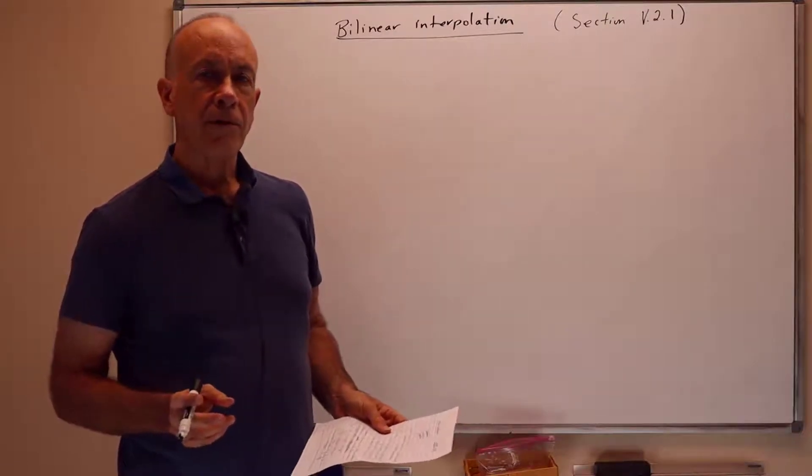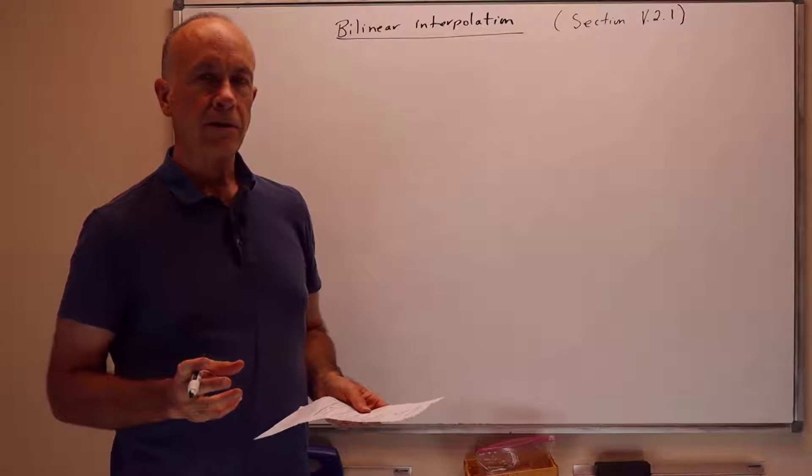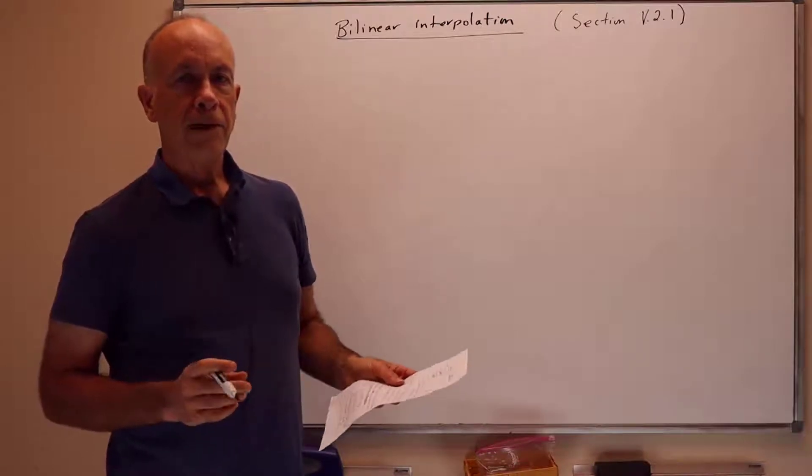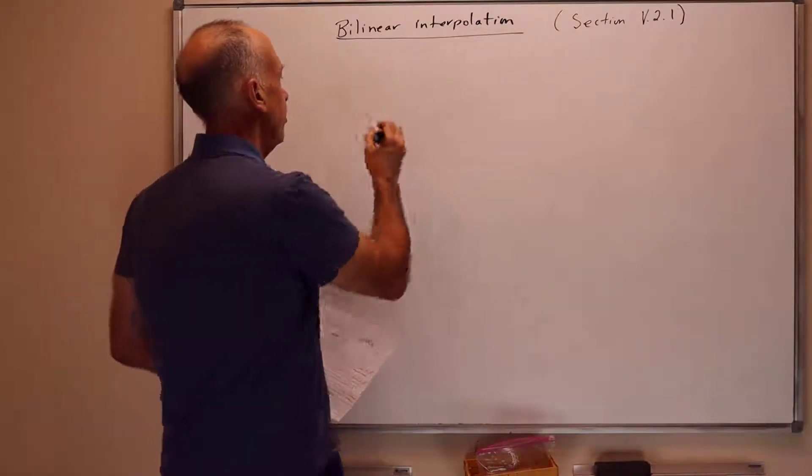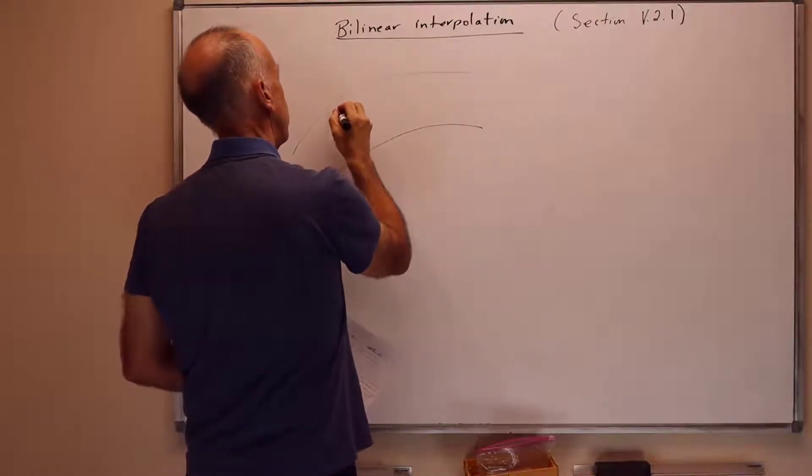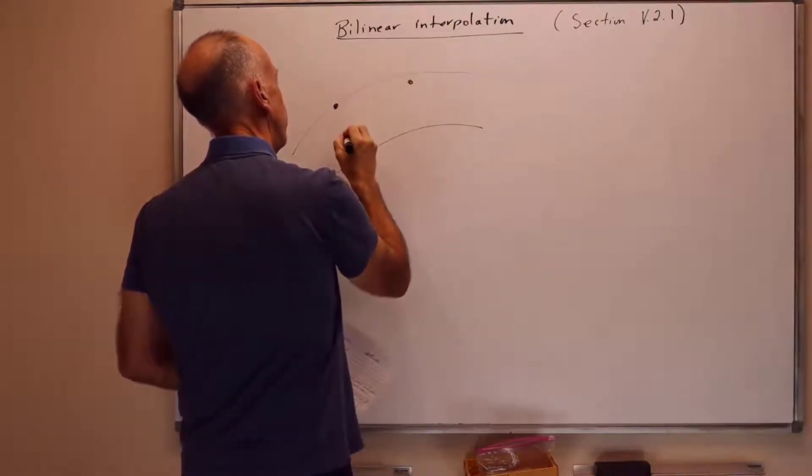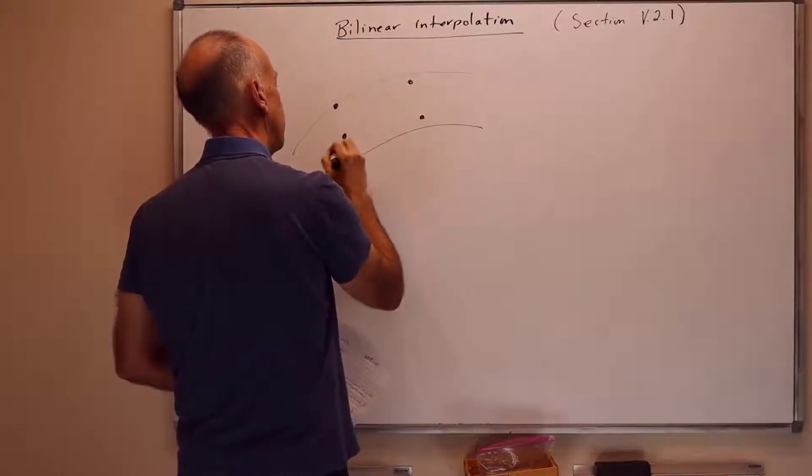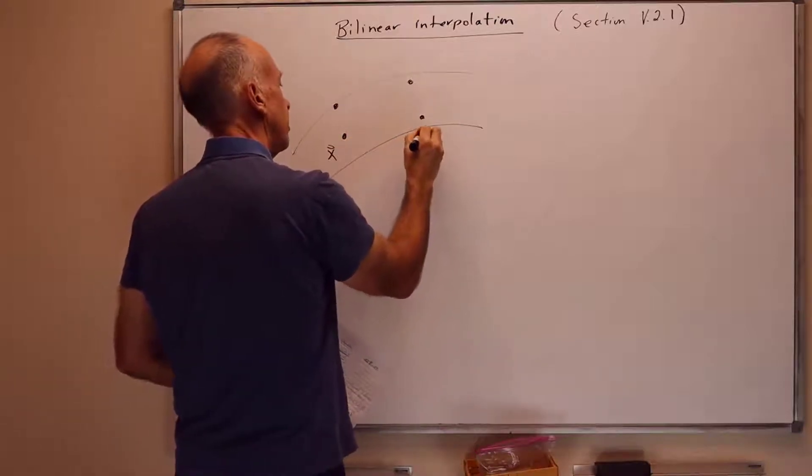The situation is something like the following. We have four points we want to interpolate in a bilinear fashion rather than a linear fashion. So typically we're thinking of we have some curved surface.